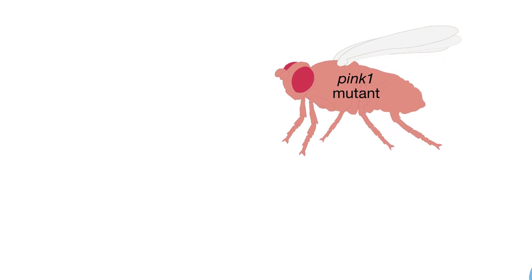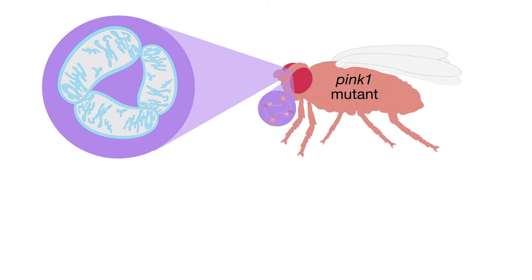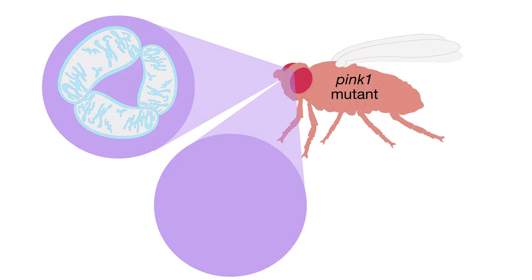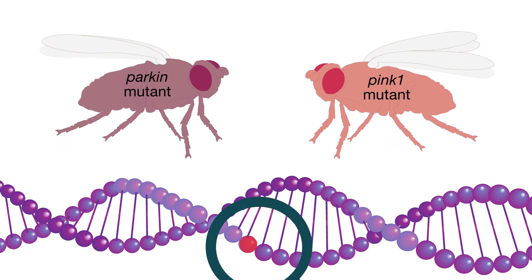Fruit flies with mutations in these genes accumulate defective mitochondria and exhibit Parkinson's-like changes, including loss of neurons. The researchers used PINK1 and PARKIN mutant flies to search for other critical Parkinson's genes.